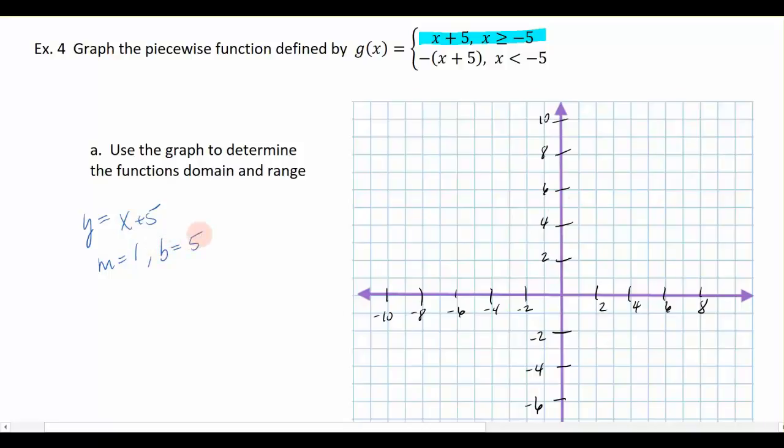So if I start at 5 on my graph, I'm going to start right there, and I rise 1, run 1, up 1 to the right.